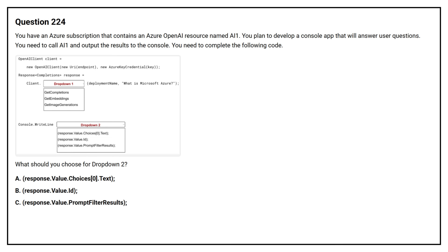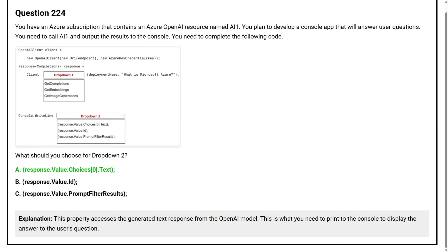Question number 224. You have an Azure subscription that contains an Azure OpenAI resource named AI1. You plan to develop a console app that will answer user questions. You need to call AI1 and output the result to the console. What should you choose for drop-down 2? The correct answer is Option A. This property accesses the generated text response from the OpenAI model. This is what you need to print to the console to display the answer to the user's question.